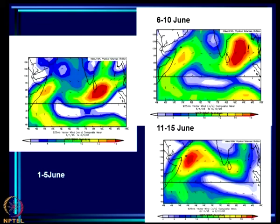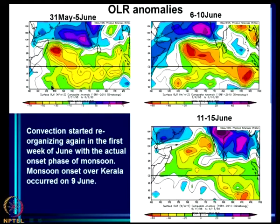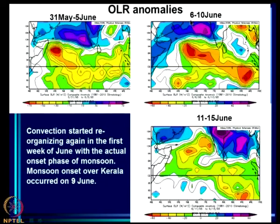Convection started reorganizing again in the first week of June with the actual onset phase of the monsoon. From June 1–5, the cross-equatorial flow became stronger in the northern hemisphere; by June 11–15 it was extremely strong. A nice belt of deep convection formed over the equatorial region and the western equatorial Indian Ocean by May 31–June 5. From June 6–10, deep convection moved northward, and by June 11–15 it had moved even further north. The onset over Kerala occurred towards the end of the June 6–10 period.